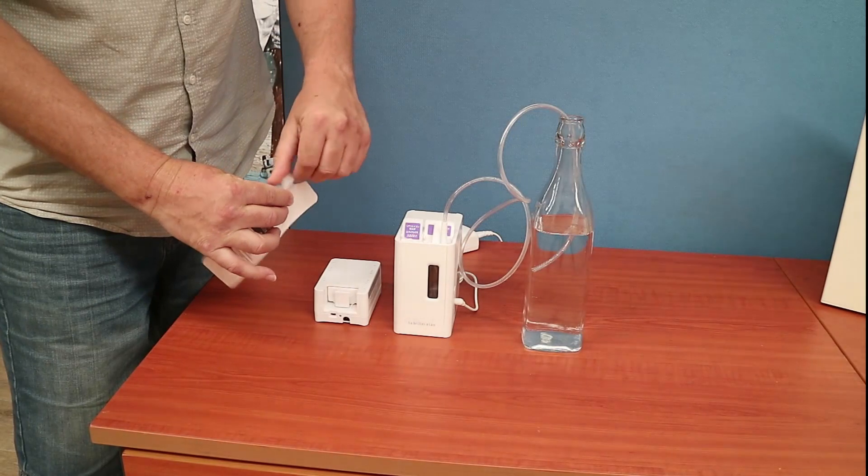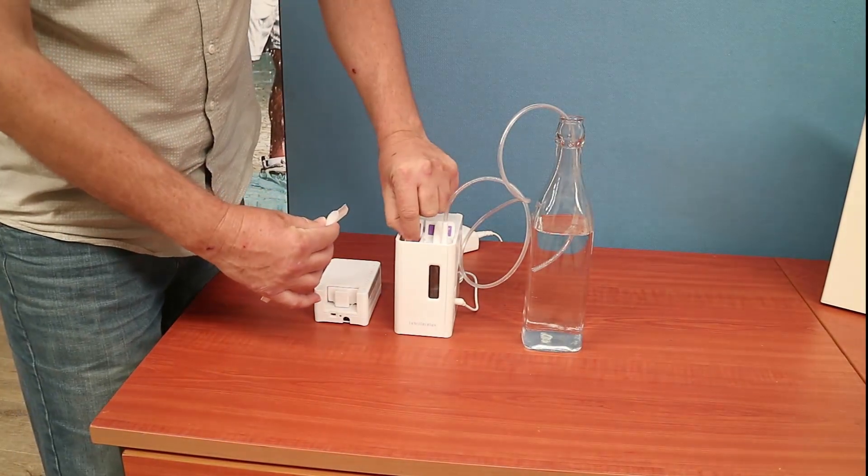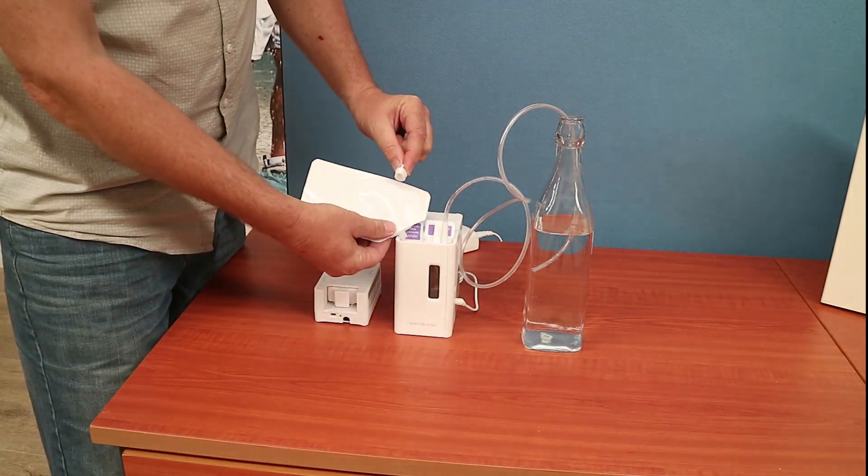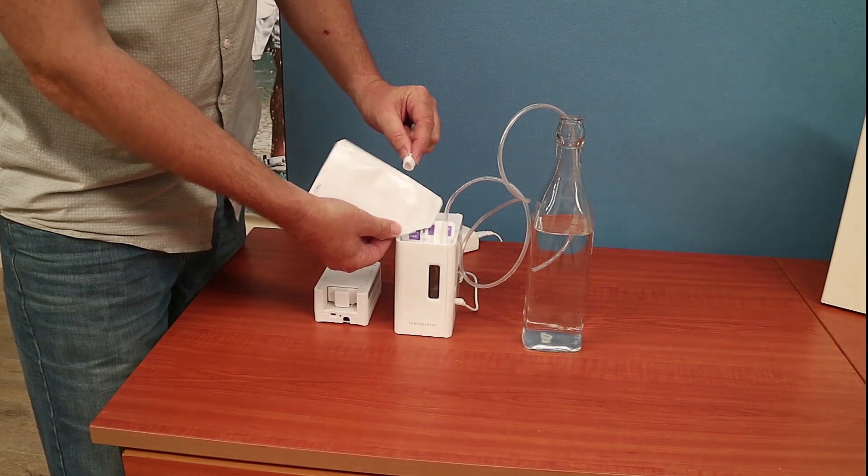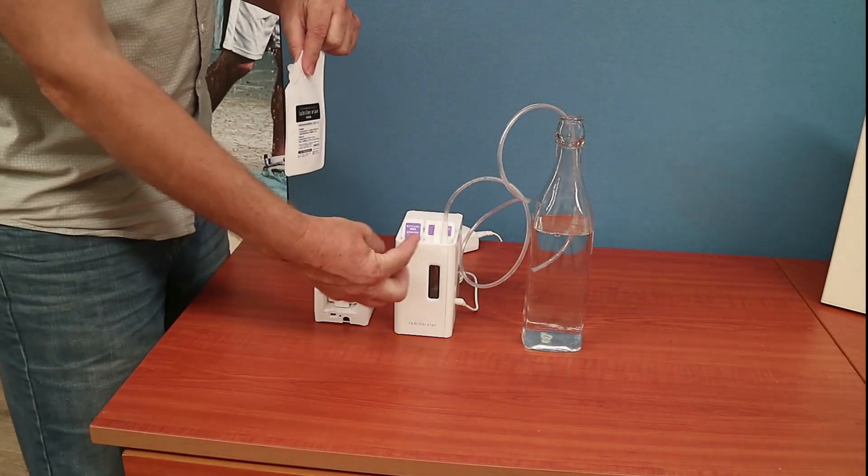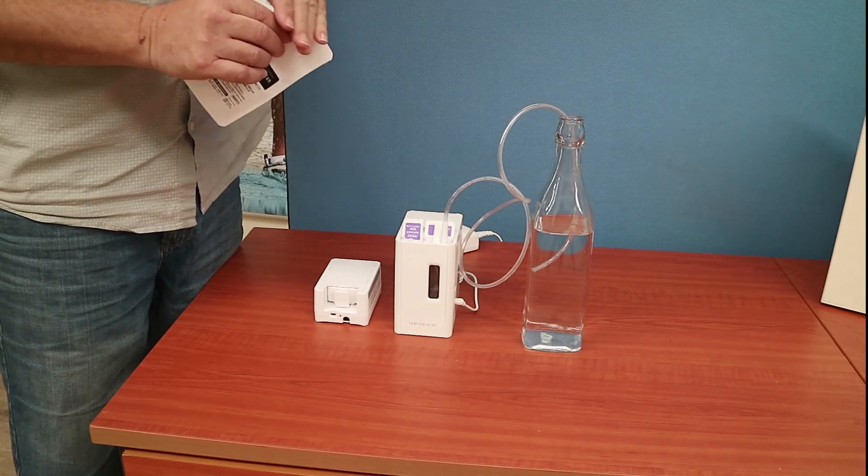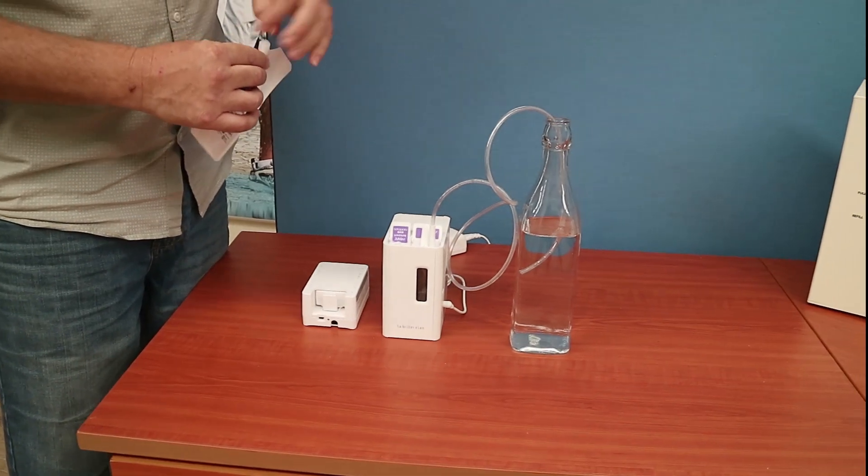They're just simple screw-off caps. Pour the electrolyte into the top of the unit. One packet goes in there, and then you wait for 45 minutes before you can use it.